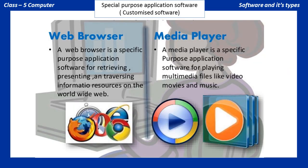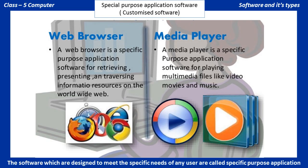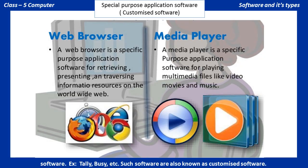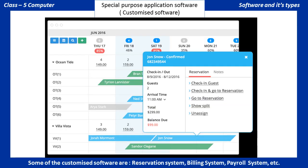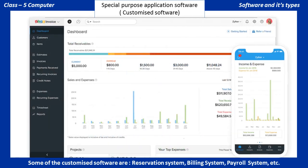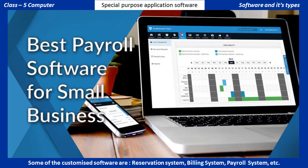Special Purpose Application Software: Software which is designed to meet the specific needs of any user is called Specific Purpose Application Software, also known as Customized Software. Examples include Tally and Busy. Some of the customized software are Reservation System, Billing System, and Payroll System.